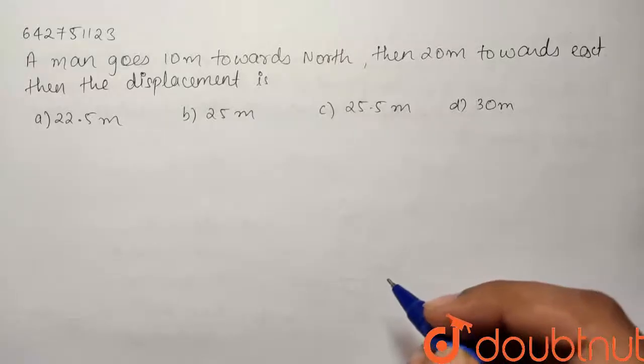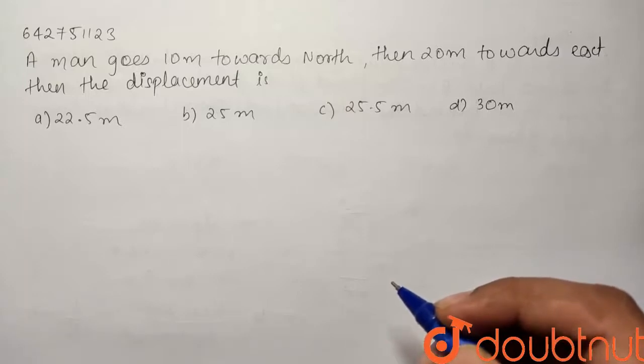Here we have a question from the chapter kinematics. A man goes 10 meters towards north, then 20 meters towards east, then we have to find out the displacement.